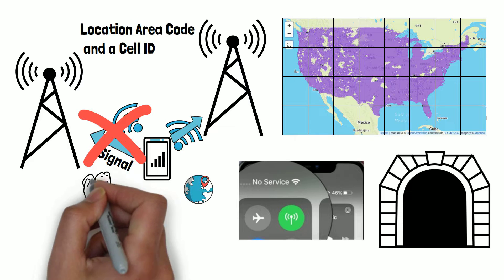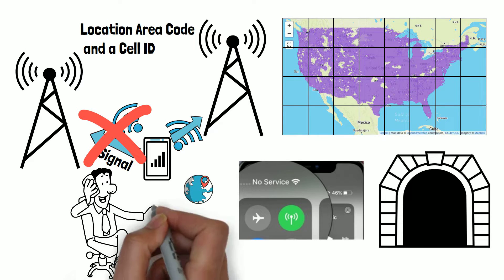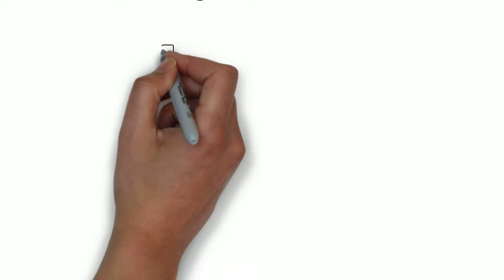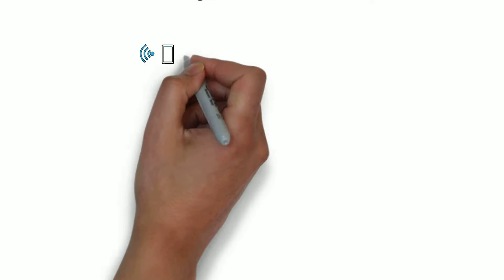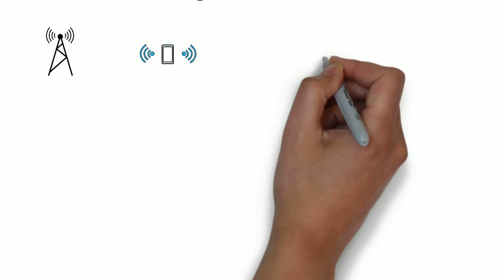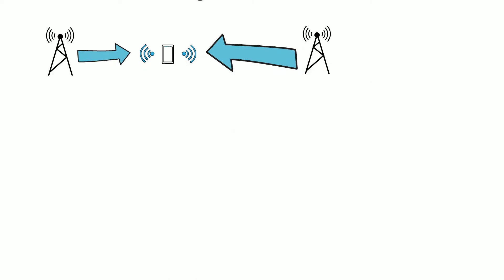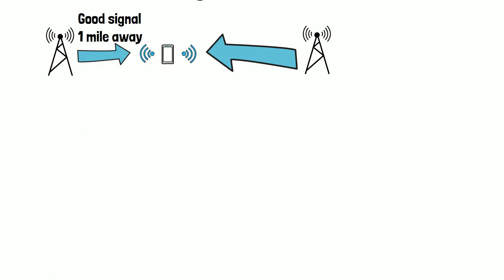This record is kept by the cell service provider. The cellular network constantly measures the signal strength of a mobile device as it communicates with nearby towers. Signal strength is used to estimate the distance between the device and each tower.